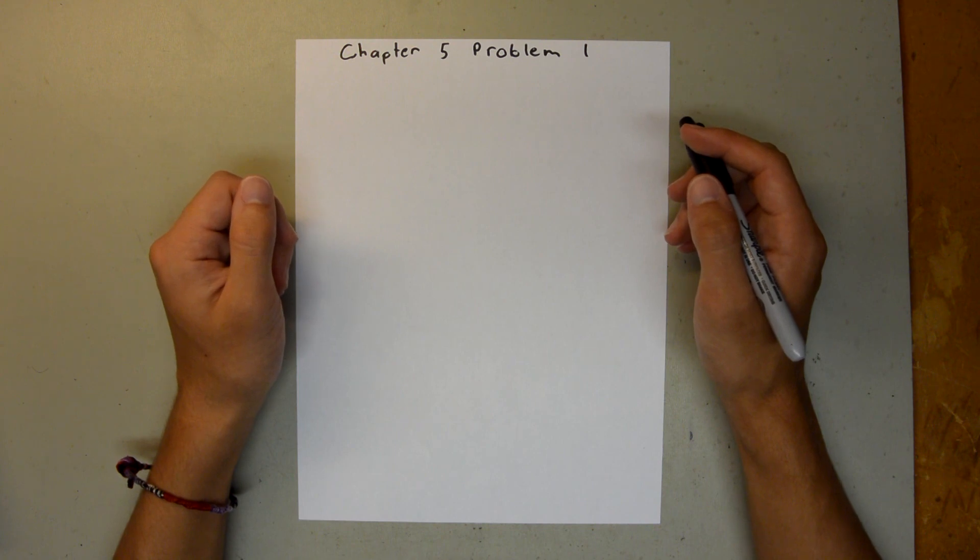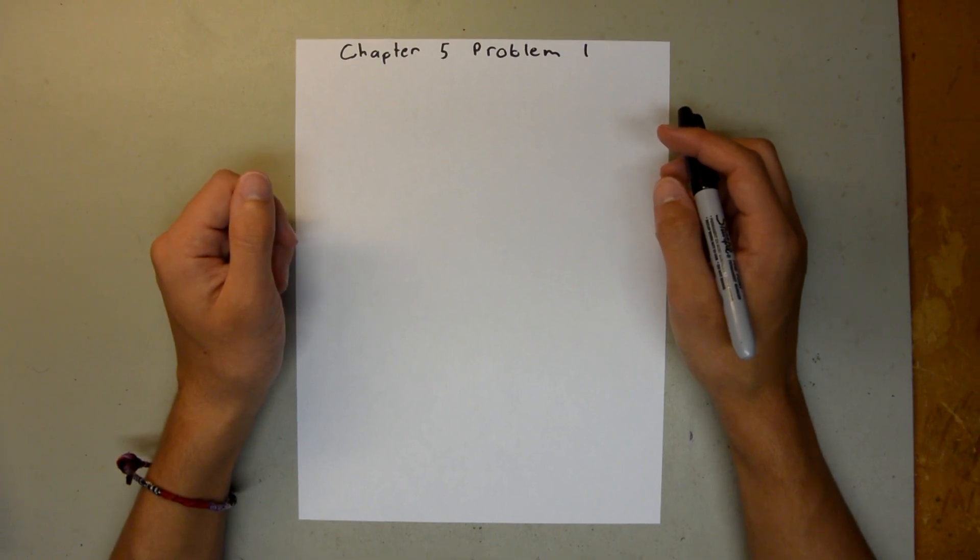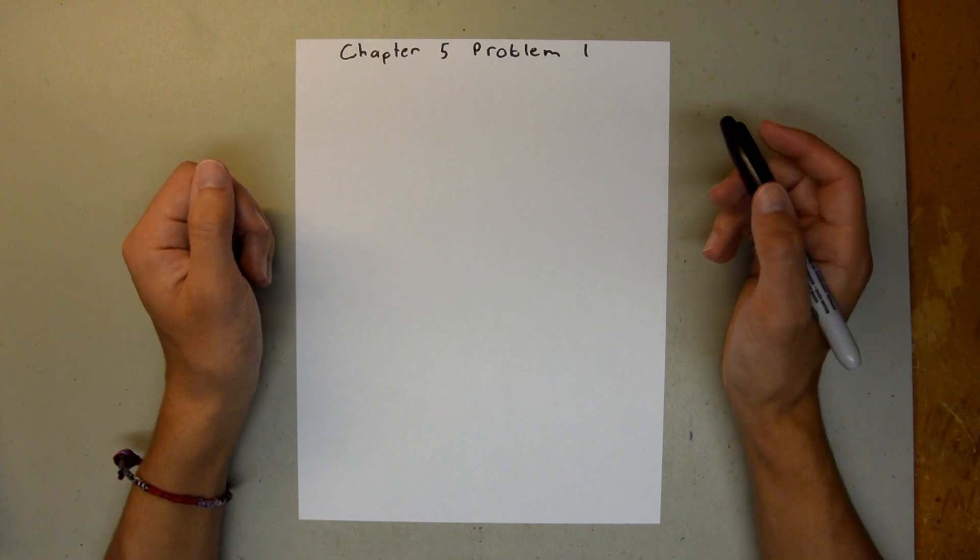Chapter 5 is all about force and motion, Part 1. In Problem 1, we are given the mass, acceleration, and direction of a standard body. We are asked to find the x and y components of the net force acting on the body and write that net force in unit vector notation.